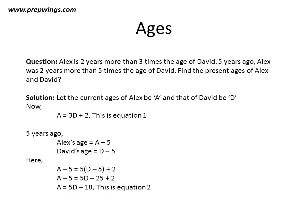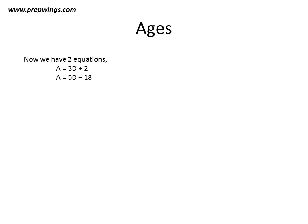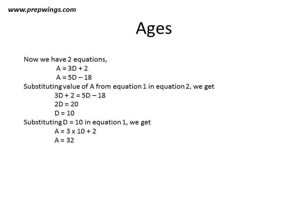A is equal to 3D plus 2 and A equal to 5D minus 18. Now substituting the value of A from equation 1 in equation 2, we will find D is equal to 10, and we put D equal to 10 in equation 1 to get A equal to 32.